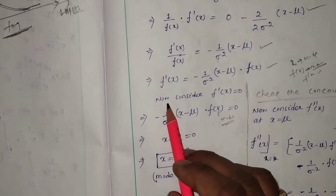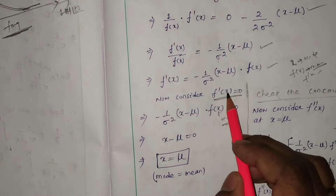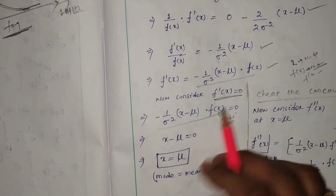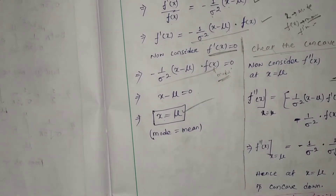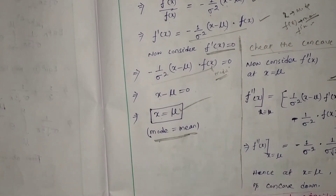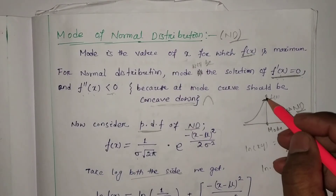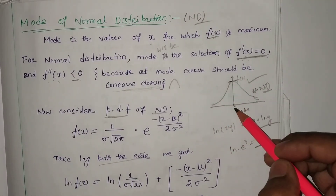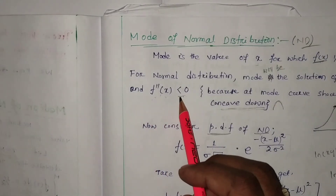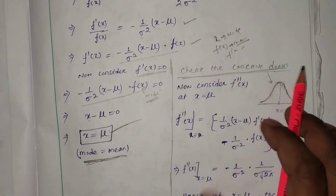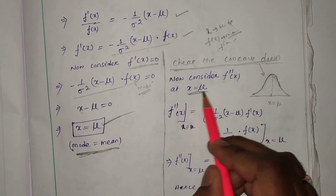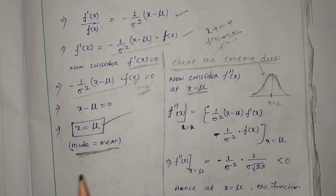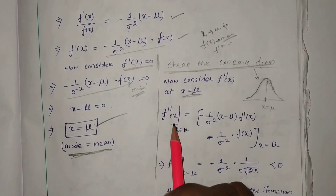Setting f'(x) = 0, we get −(1/σ²)·(x−μ)·f(x) = 0, so x − μ = 0, meaning x = μ. This proves mode equals mean. We also need to verify that at this point the curve is concave downward, because the normal distribution has a peak at the mean with the curve concave downward at that point.